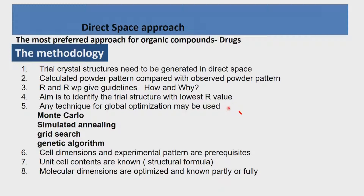Any technique for global optimization may be used: Monte Carlo, simulated annealing, grid search, and genetic algorithm. Accurate cell dimensions and a good experimental pattern are the prerequisites. The structural formula has to be known and the molecular dimensions are then optimized if known partly or fully. This approach generally allows structure determination directly without making assumptions. These methods are undergoing a lot of changes; many structures are being solved now, but not to the extent of those coming every day from single crystal diffraction, as the methods are yet to be fully tested.